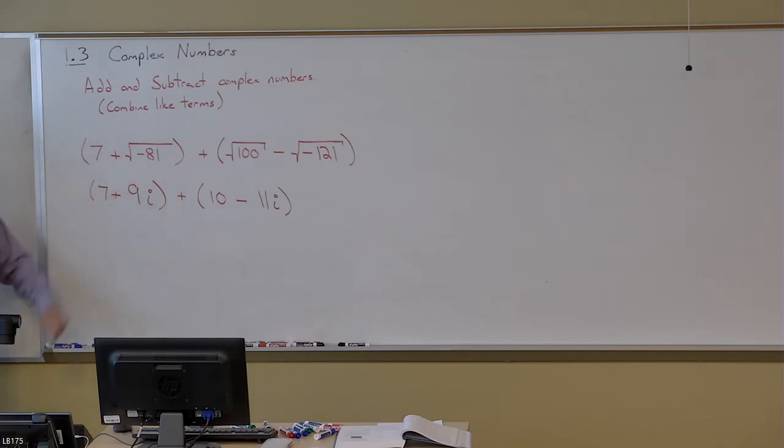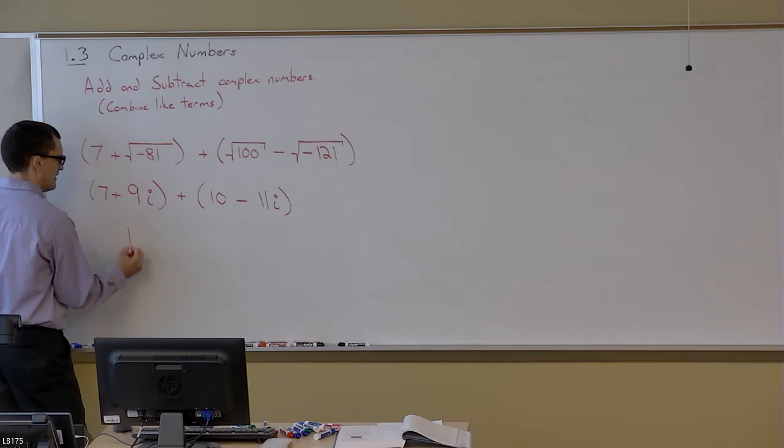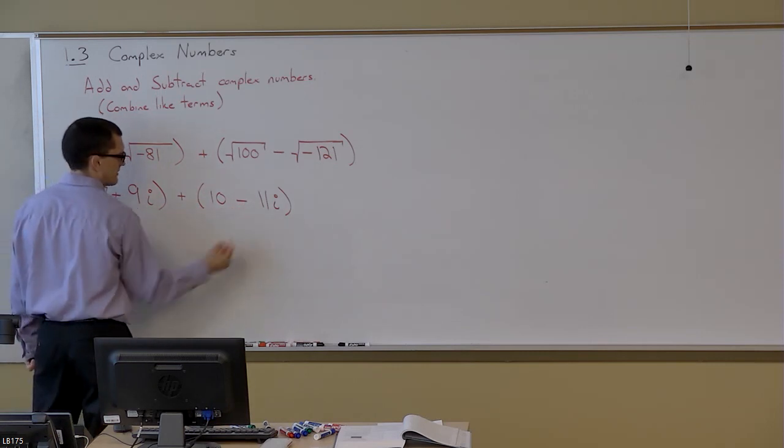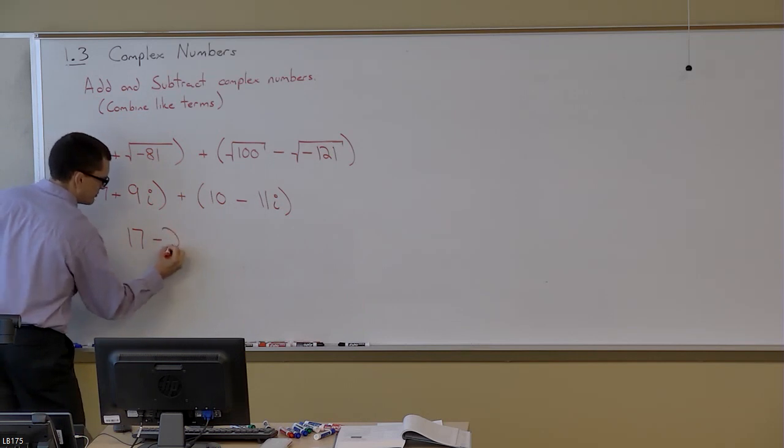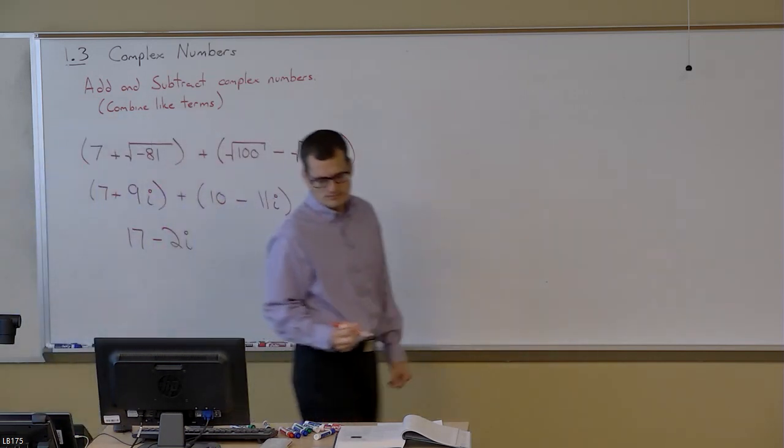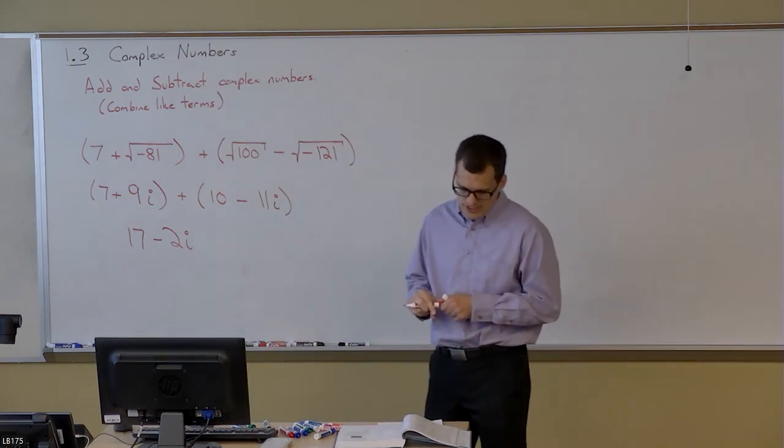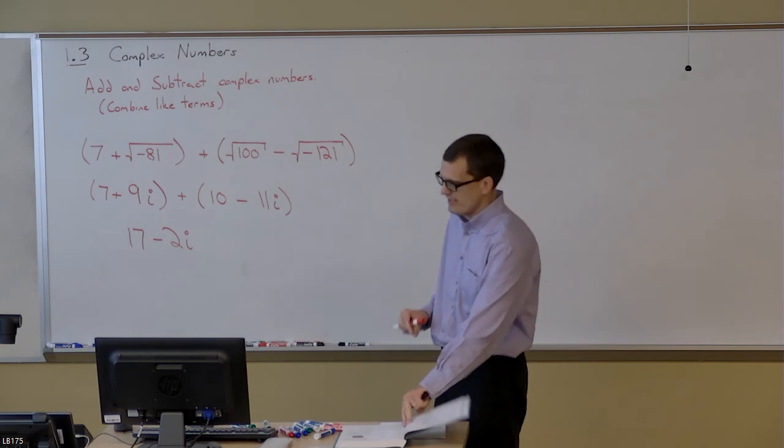So I get 7+9i+10-11i. Now combine like terms: 7+10 is 17, 9i-11i is -2i.